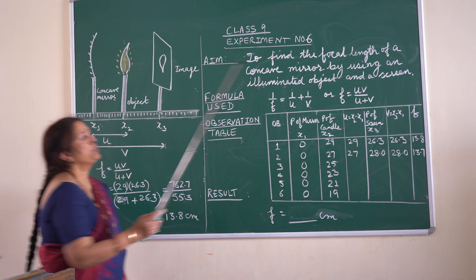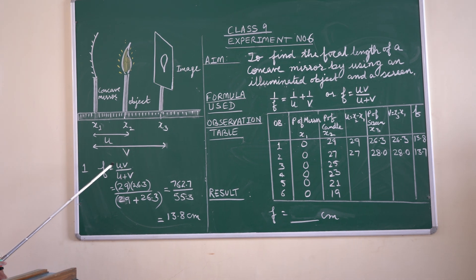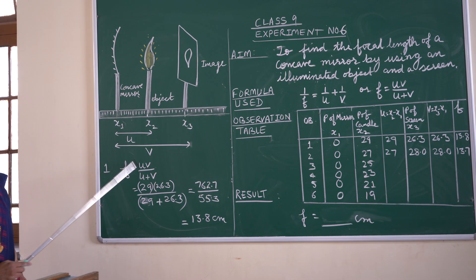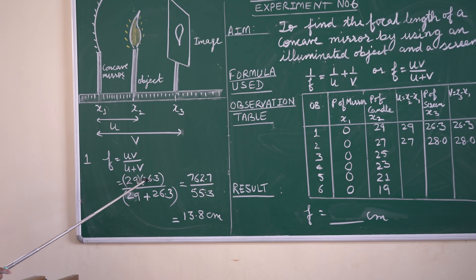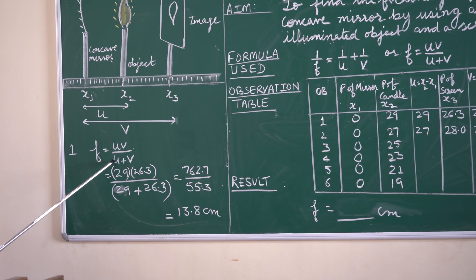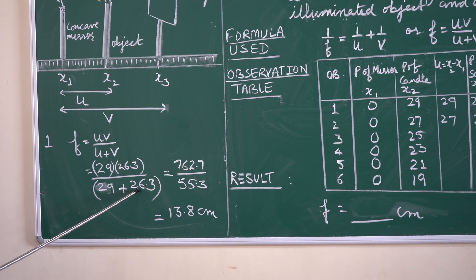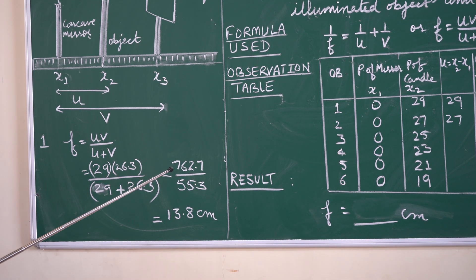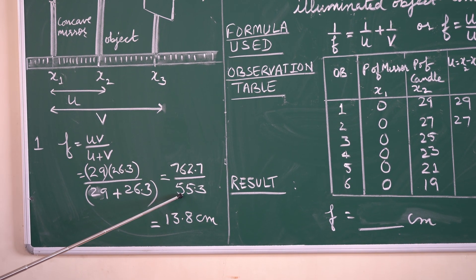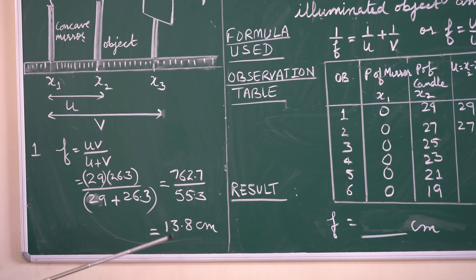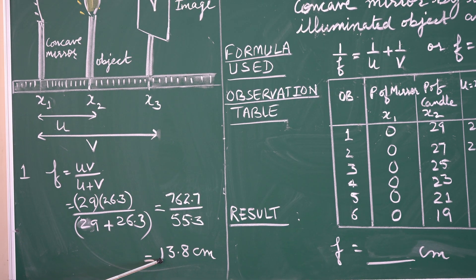This is shown in the calculation here. For the first reading, the value of u is 29 and the value of v is 26.3. So we calculate 29 × 26.3 divided by 29 + 26.3, which gives 762.7 divided by 55.3, and the answer comes out to be 13.8 centimeters.